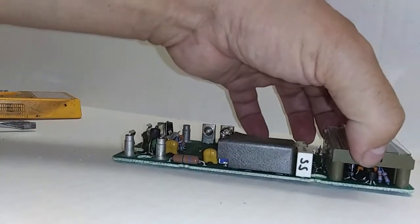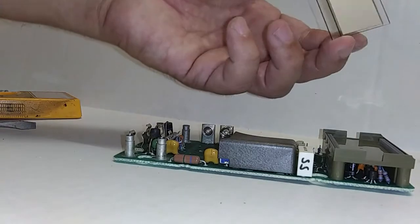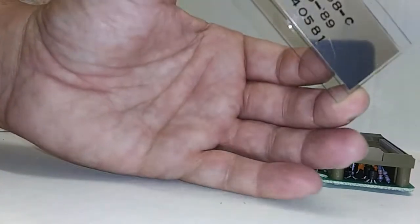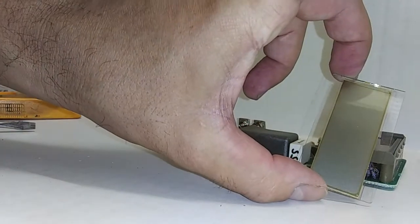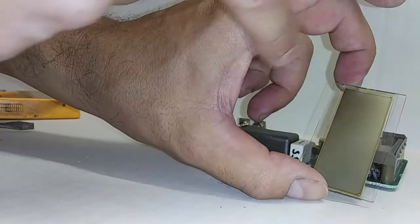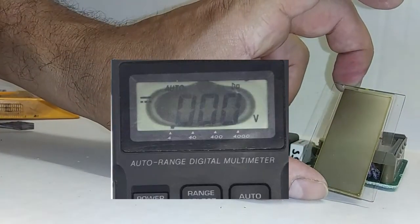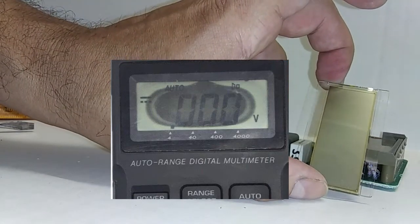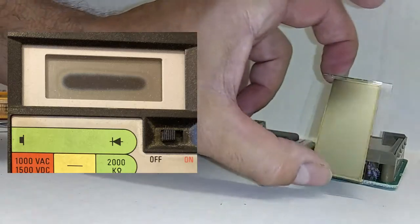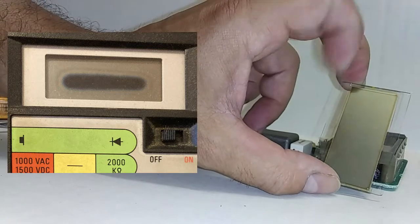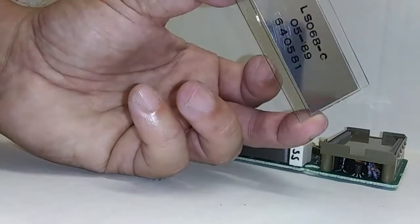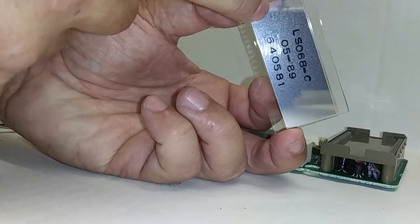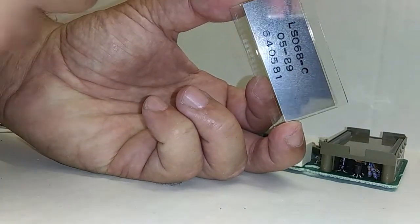But before we go any further while it's still apart I want to look at the back of this. Sometimes you will see a display that will be completely dark around the edges, almost in a circular fashion, and it'll be faded and then the center of the display will be the only clear part. What you're seeing is this back tape or reflective material.